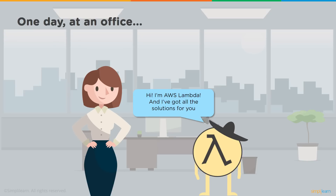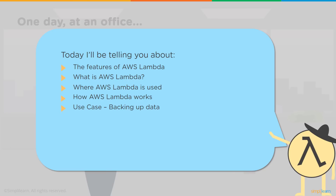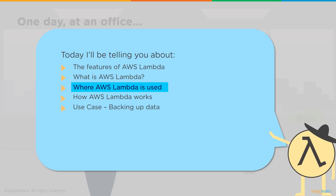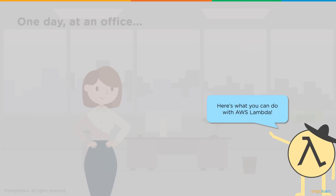In this section, we're going to learn about the features of AWS Lambda — what Lambda is, where Lambda is being used in IT and cloud environments, how Lambda works, and some use cases. We'll particularly discuss the use case of automatically backing up data that's put in cloud storage.